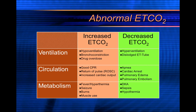Just a quick chart to help you remember: an increase in end-tidal CO2 — the ventilatory causes would be hypoventilation, bronchoconstriction, or drug overdose. The circulatory causes would be good CPR, return of spontaneous circulation, and increased cardiac output. The metabolic causes of an increased end-tidal CO2 would be fever, seizure, burns, and muscular use.